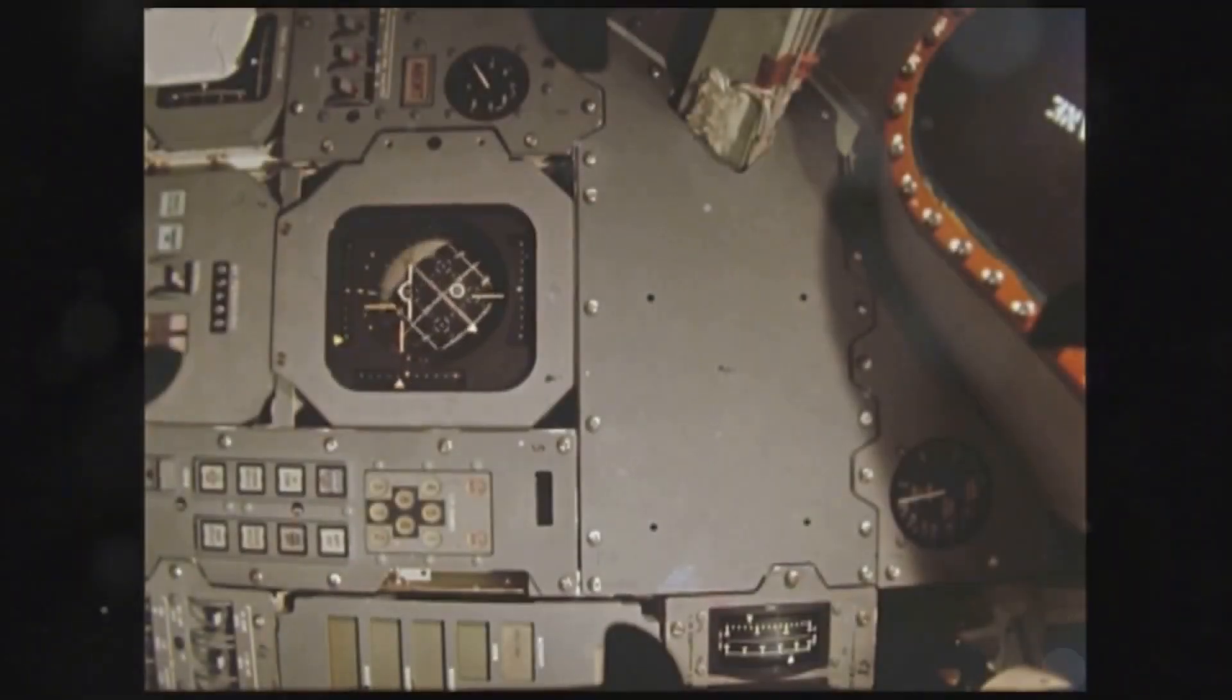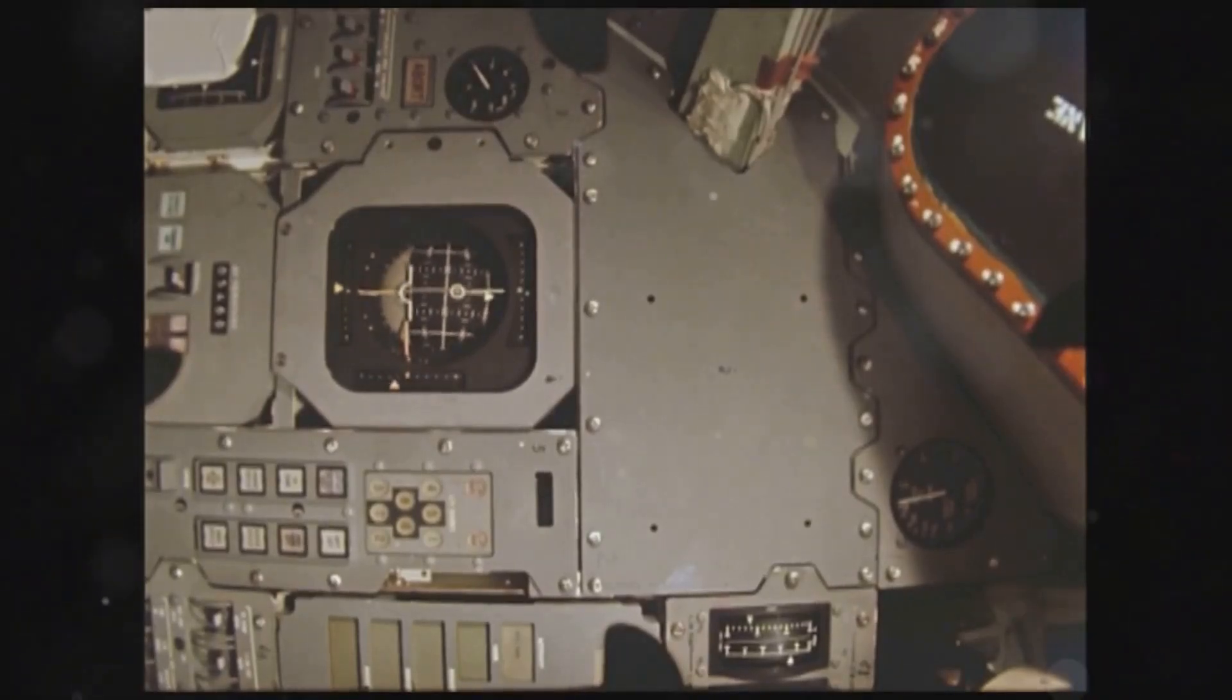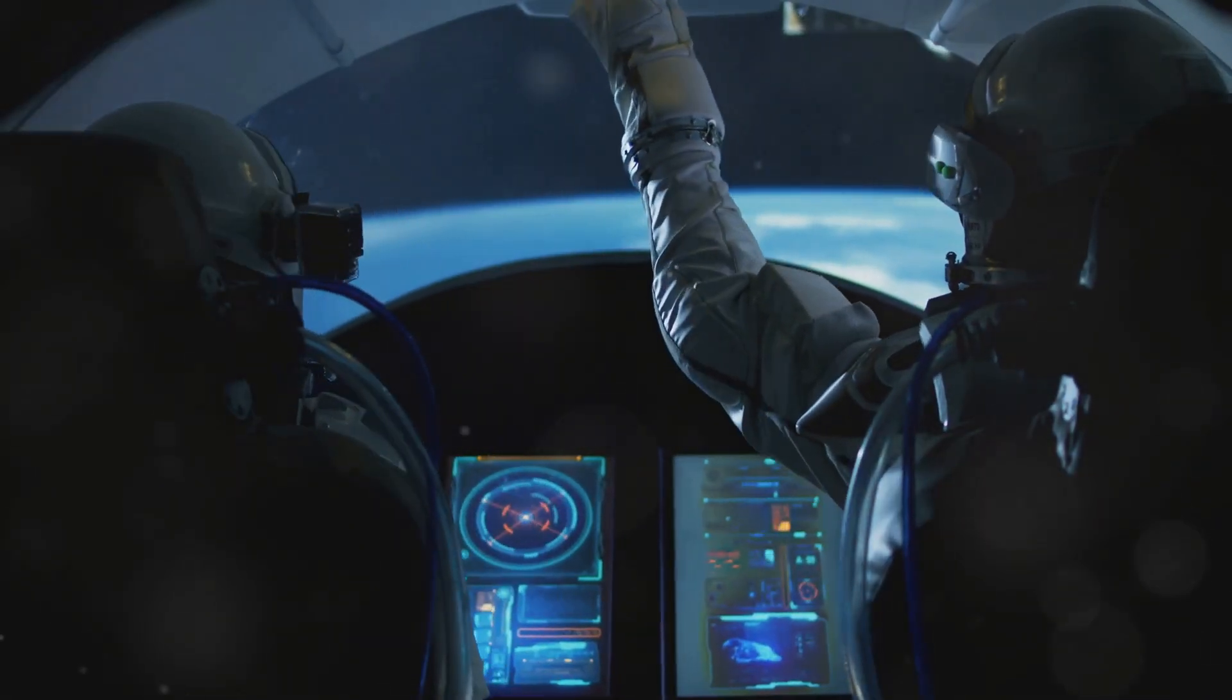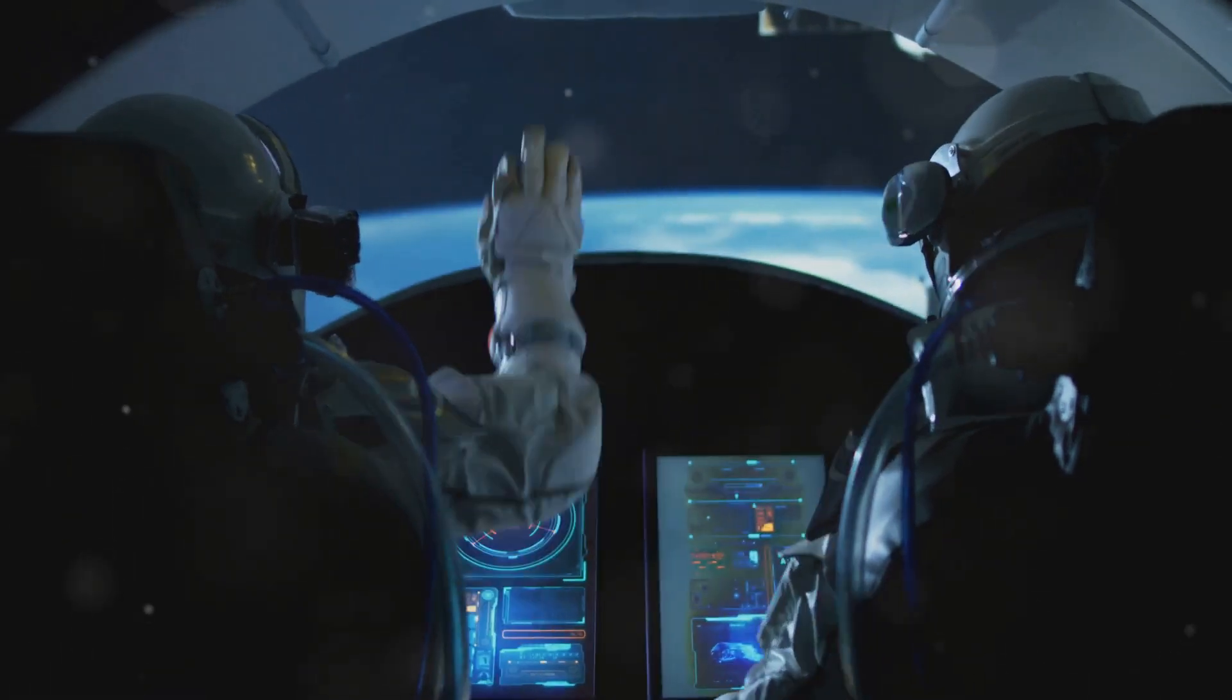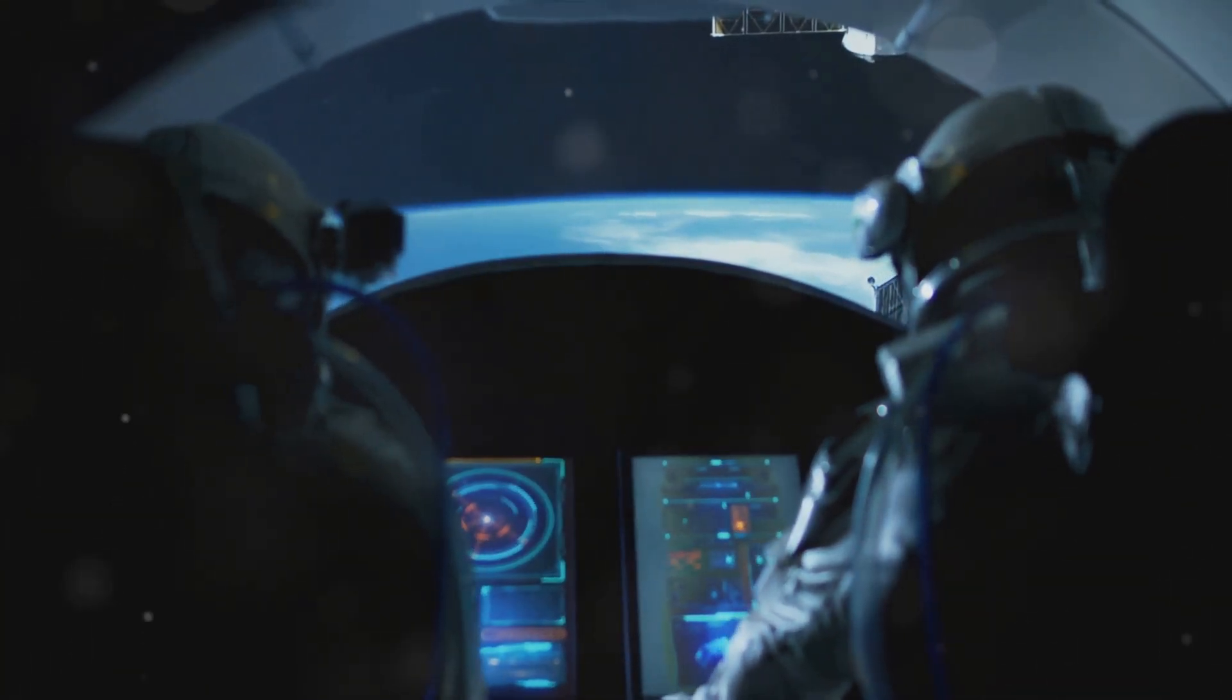Section 6: The Role of Technology. Modern technology has revolutionized space navigation. Instruments like gyroscopes, accelerometers, and star trackers provide precise data, helping spacecraft maintain their orientation and direction.